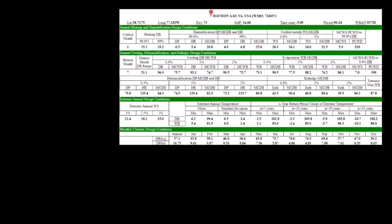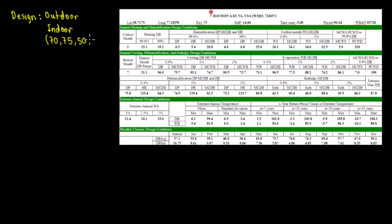From the other videos we saw that we have three options. Anytime anyone is doing a design, we're always going to need the outdoor conditions and indoor conditions. Usually for the indoor conditions we have the indoor temperature at 70–75 degrees in summer and 50% relative humidity.